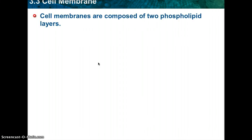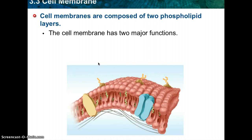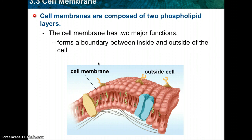We talked about phospholipids a while back — we're going to come back to them now. The cell membrane is composed of two phospholipid layers. The cell membrane is going to regulate what enters and leaves the cell, and provides protection and support.